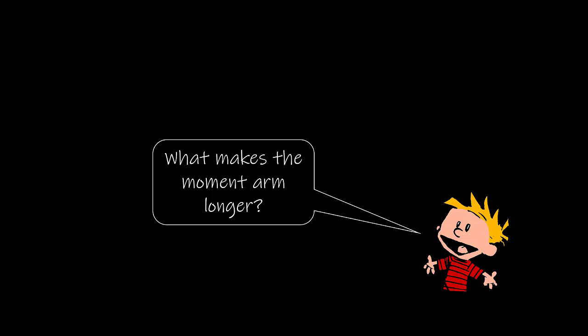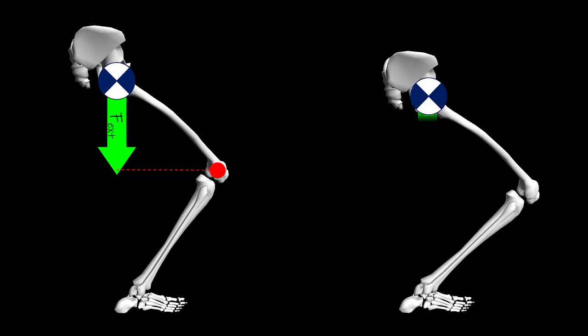Now let's visit the idea of moment arms within the body. What makes the moment arms longer? Well, first, if you have longer segments, you're going to have longer moment arms, and therefore it's going to be harder for somebody who is taller to lift than it is for somebody who is shorter. Additionally, looking at the skeletal configuration on the left-hand side of the screen, we can see that the external force is going to be some distance away from the axis of rotation of the knee. However, if we were to squat deeper, that same force is going to be further away from the axis of rotation of the knee, and therefore the moment arm is not going to be the same throughout the range of motion.